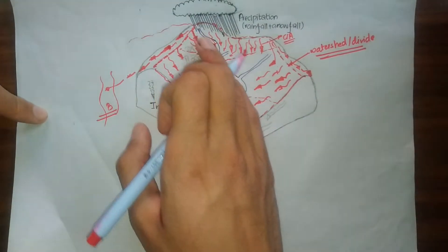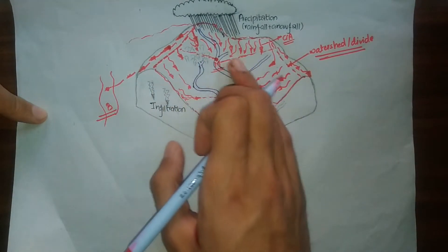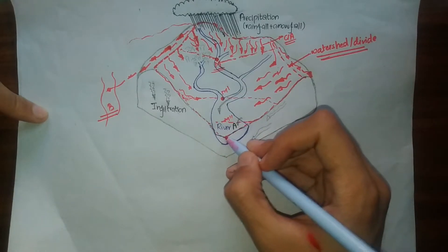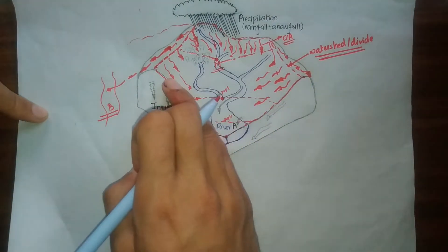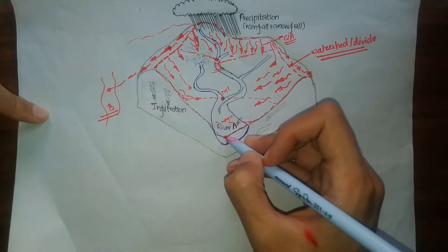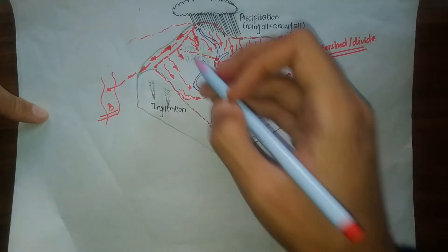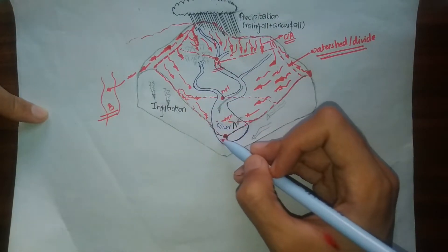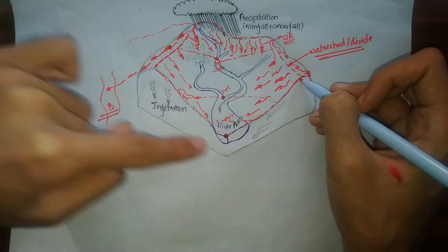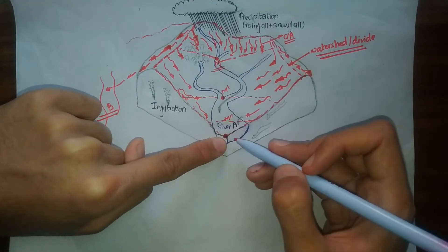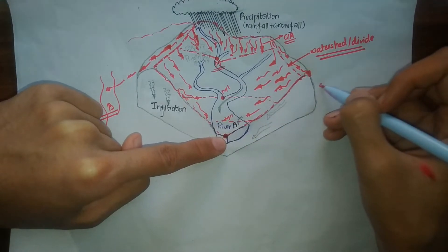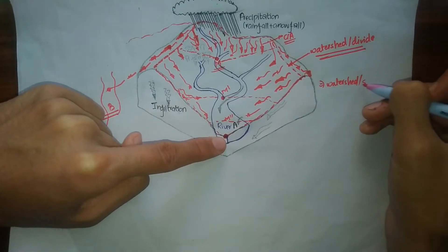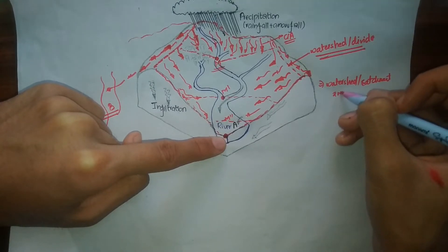Catchment area simply means the area of land from which water gets deposited at our chosen point. As we move more downward, our catchment area becomes our complete watershed. When we move down to that point on the river, all the water from all this area — the entire watershed boundary denoted by the red line — contributes. So when we move sufficiently downstream, the catchment area and watershed are exactly the same.